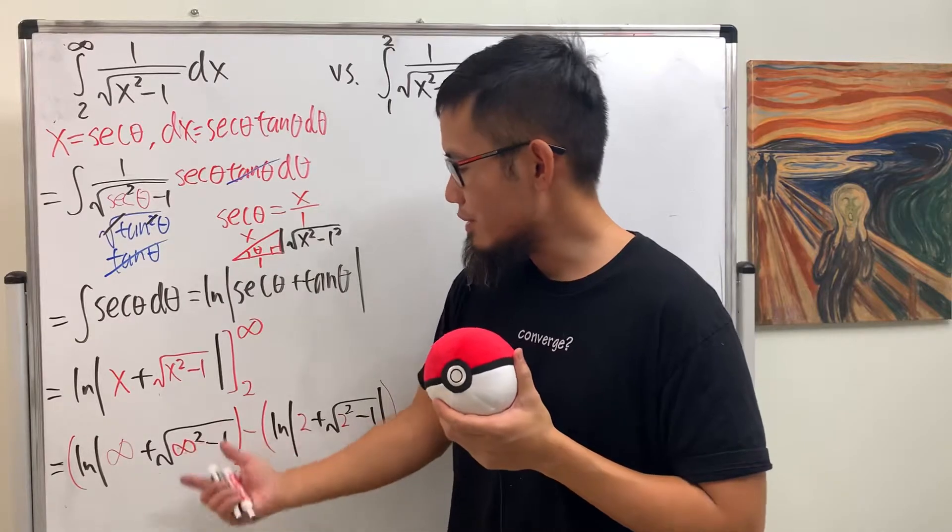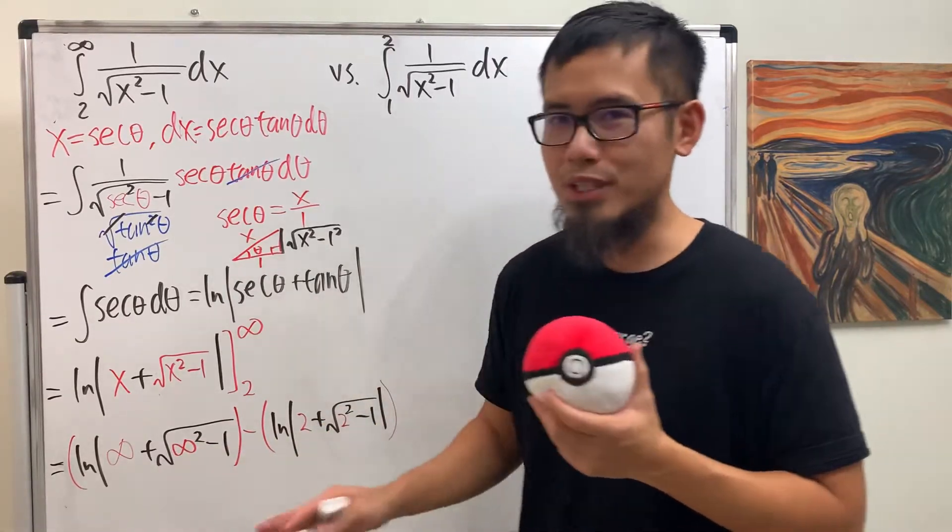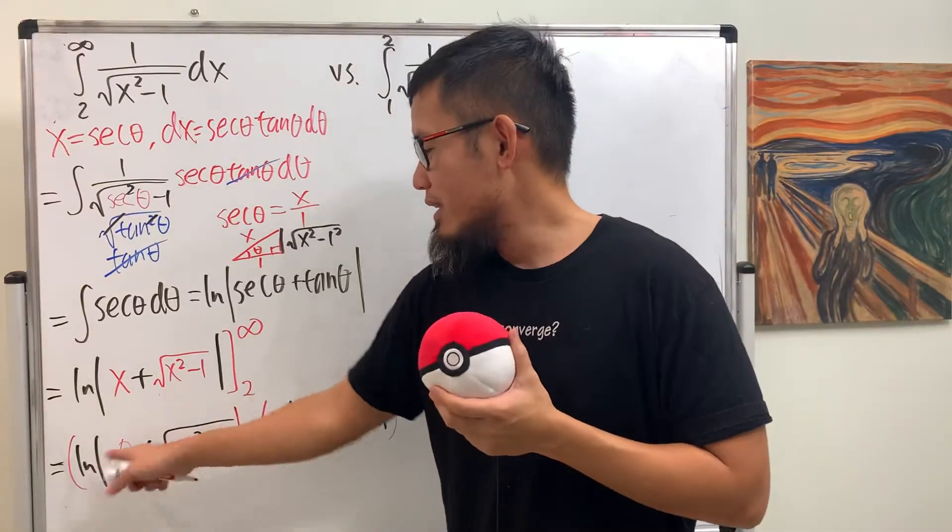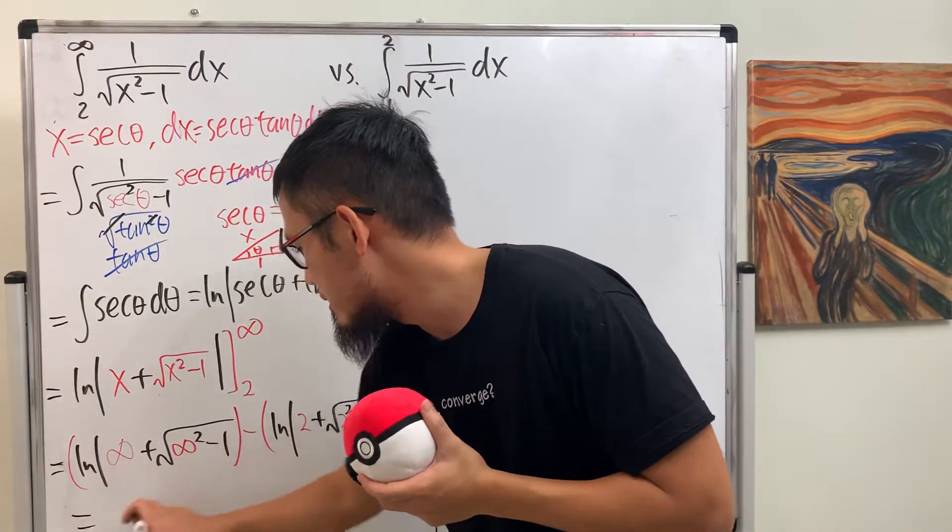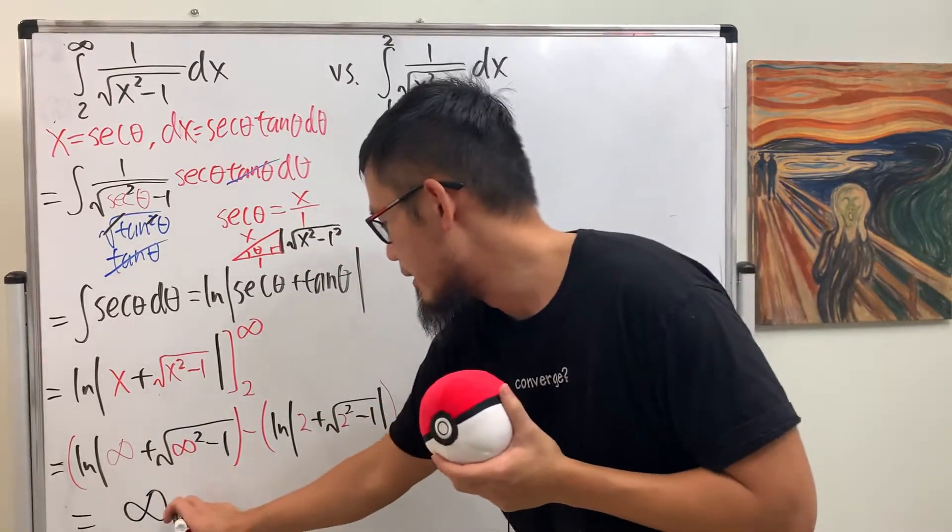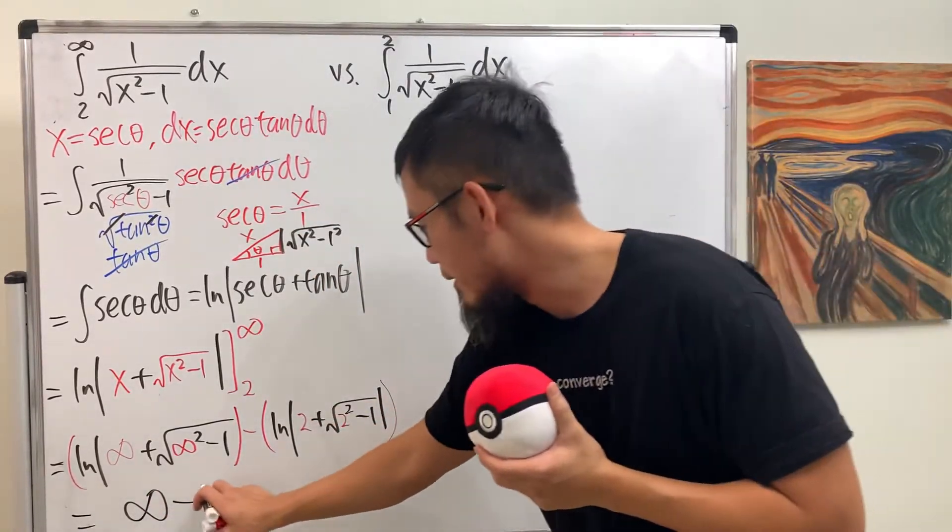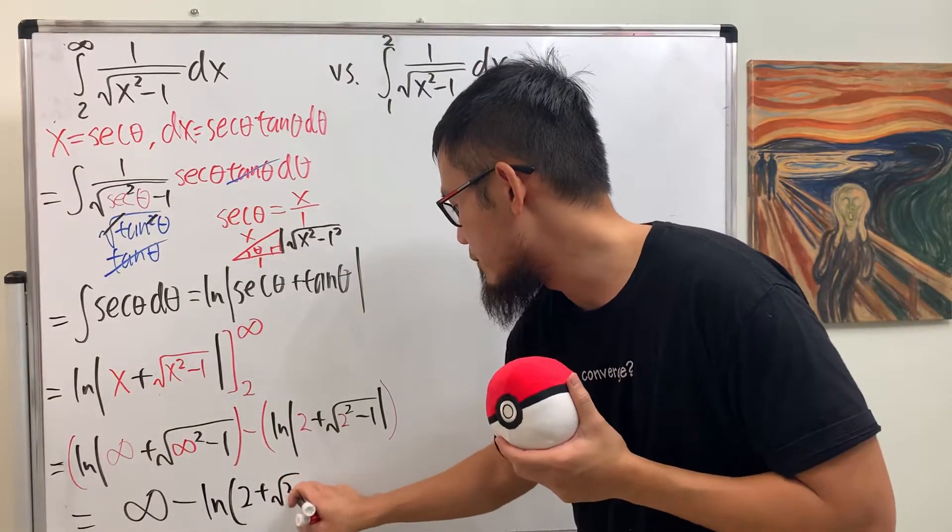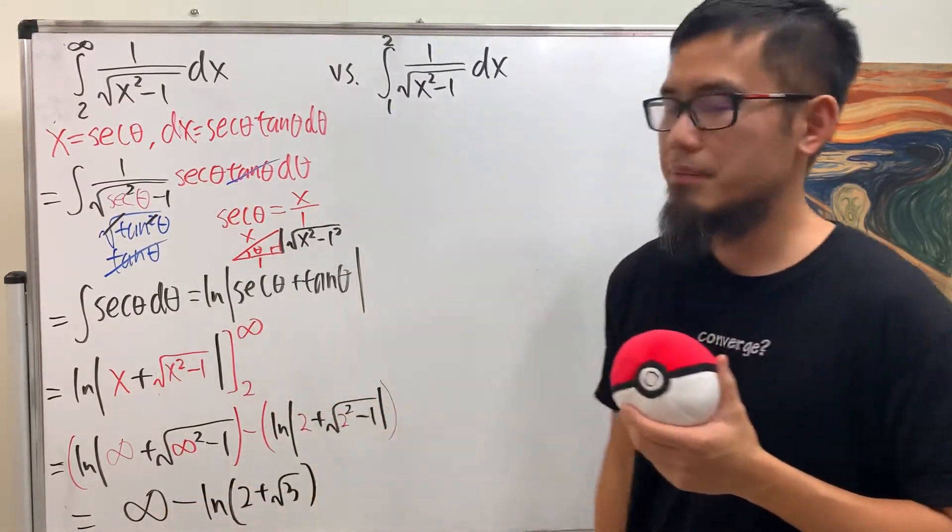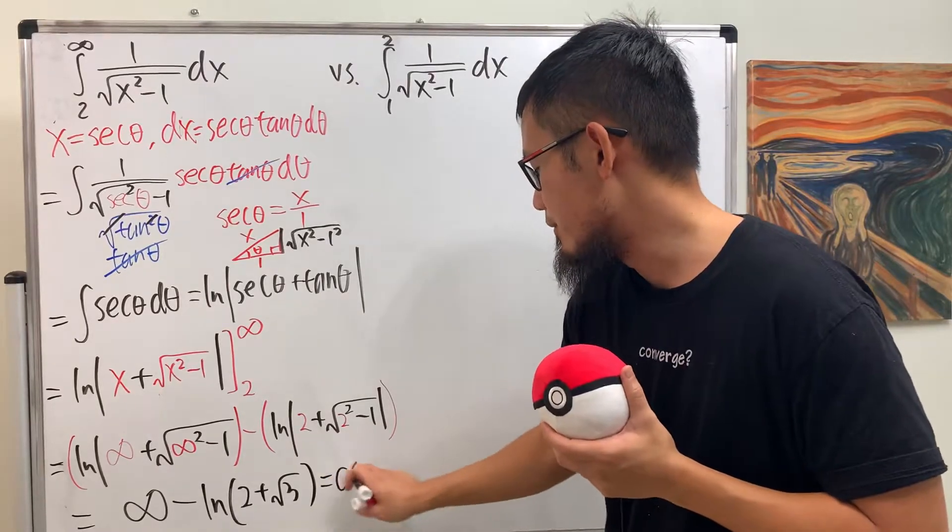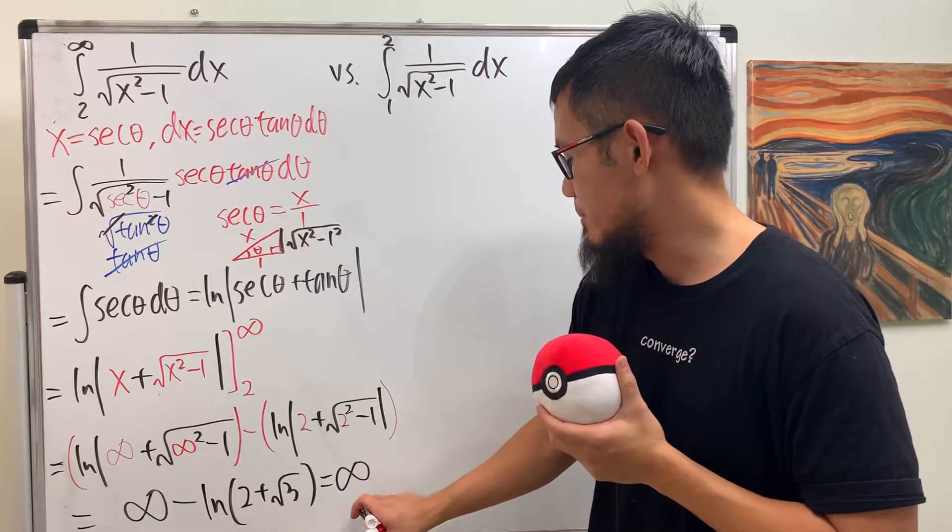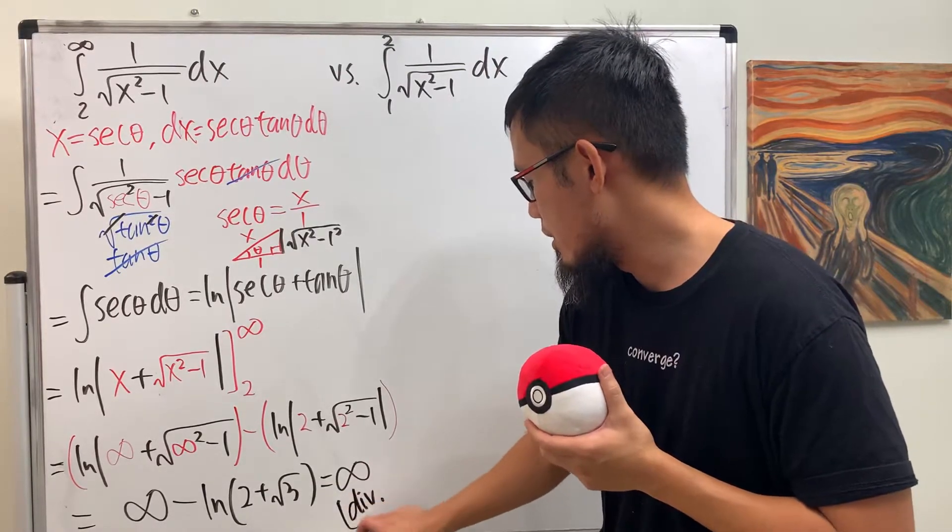ln infinity is infinity, so the first part here is infinity, second part is, well, it's a number, it's a finite number, ln of 2 plus square root of 3, so infinity minus that, the infinity unfortunately will overtake that, so this right here diverges.